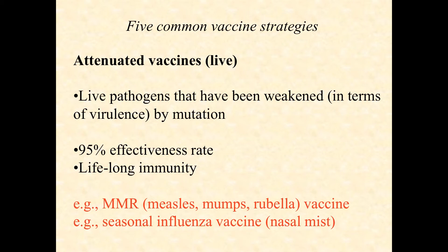But from others like MMR — measles, mumps, rubella — you'll often get lifelong immunity. Because it's attenuated and live, it's the closest thing you're going to get besides an actual infection. The trade-off is obvious: the risk is higher. Live microorganisms run a higher risk of causing an actual infection, so it's riskier from that perspective, but the payoff is higher as well.